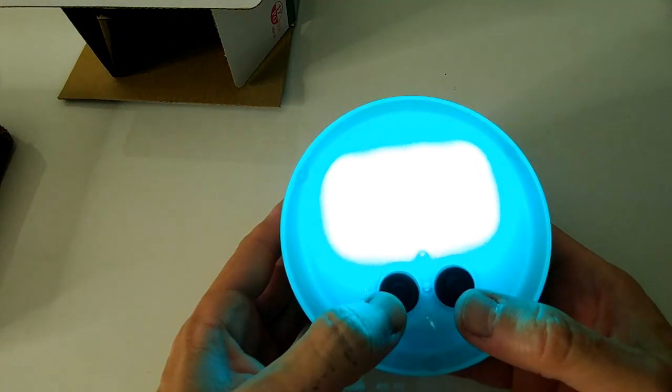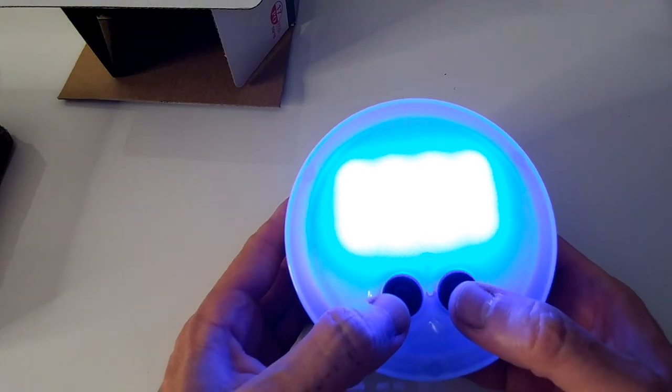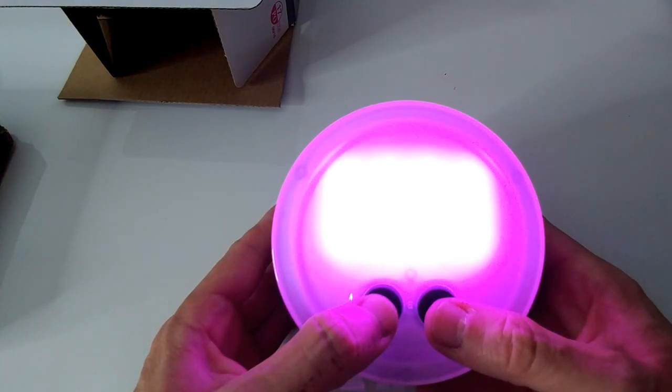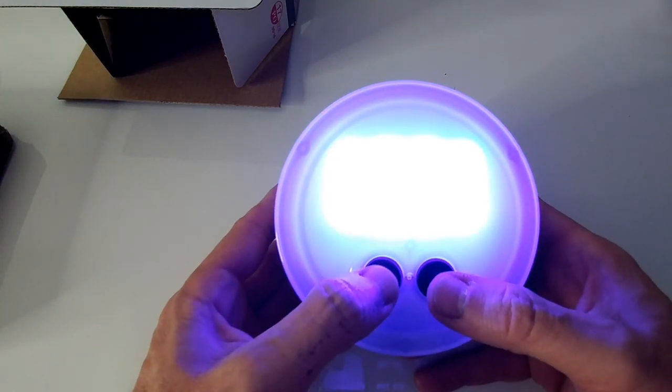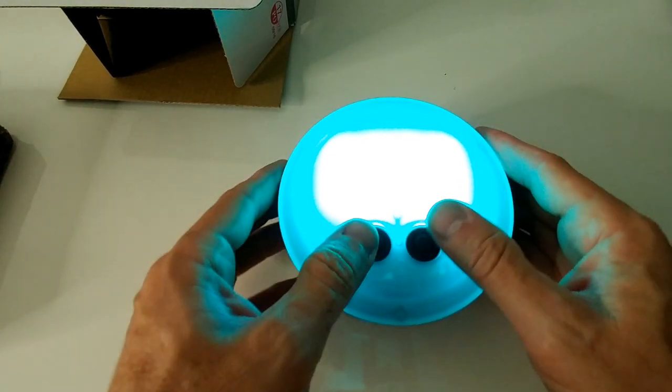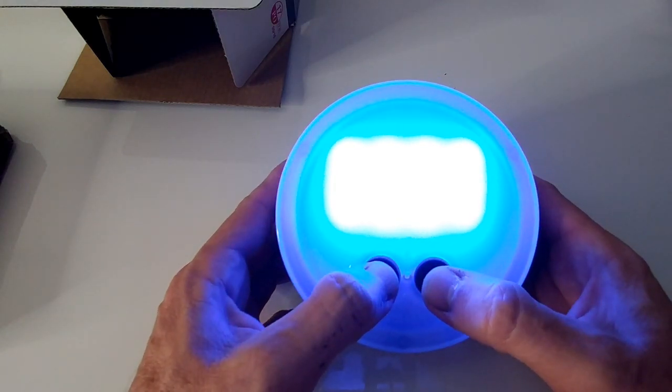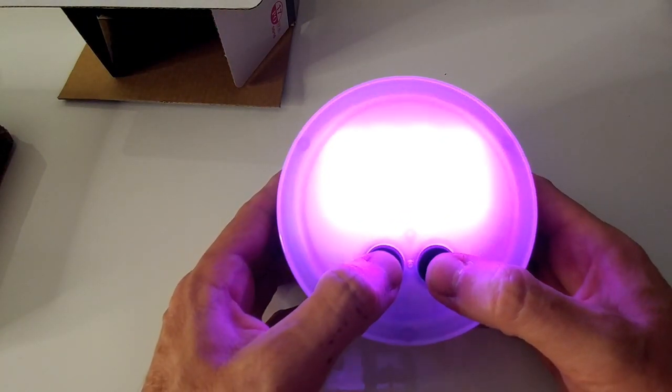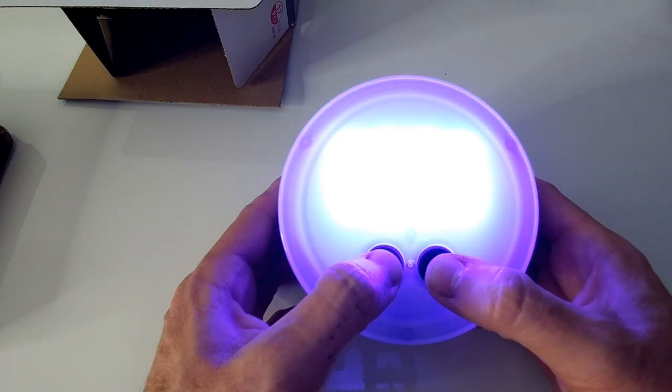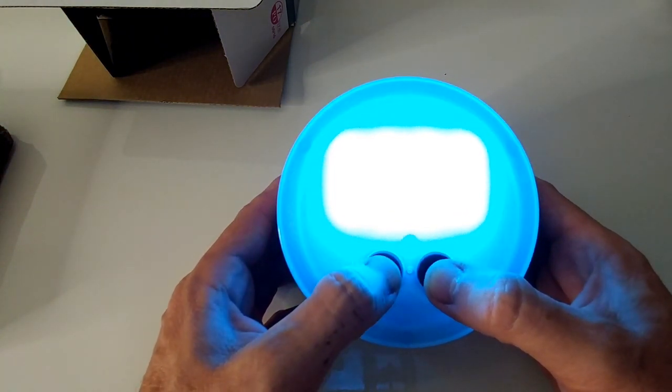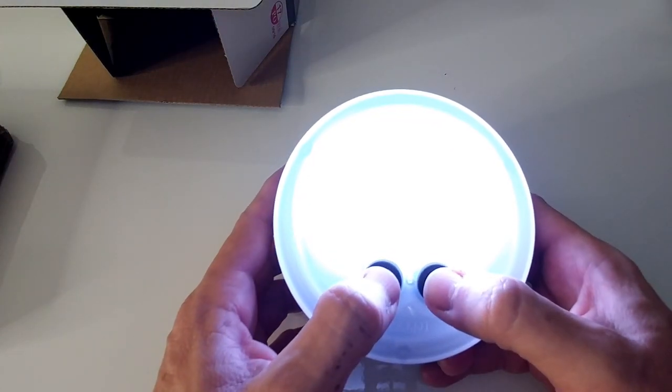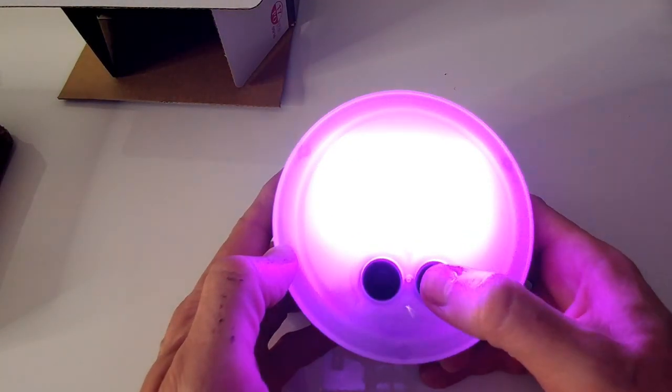It's in a mode where it will switch all the colors - violet, blue, green. It goes through red, purple, almost white, blue, green. On the right side we can change colors manually - white, green, blue, purple, and off.